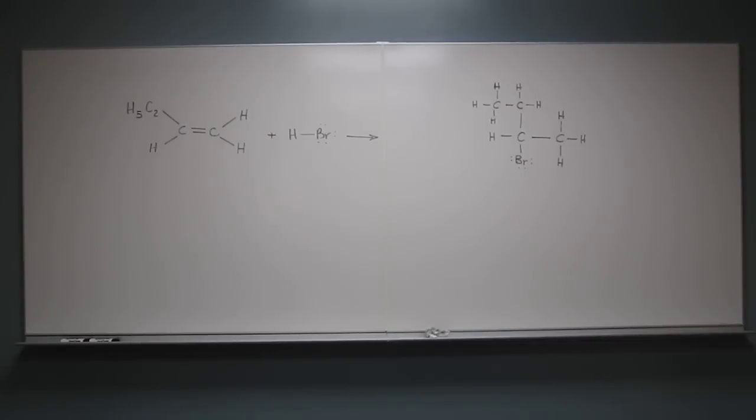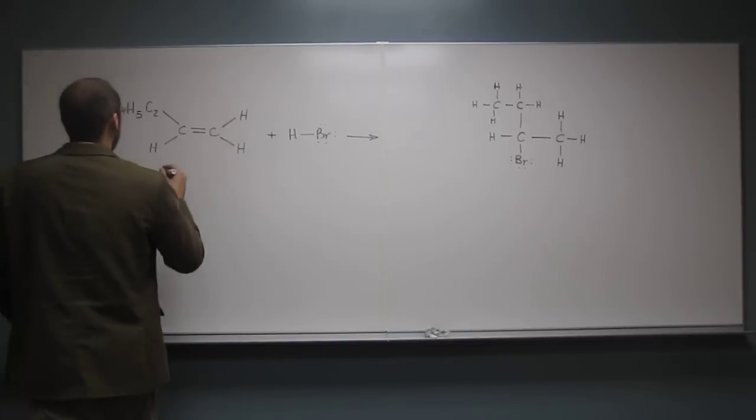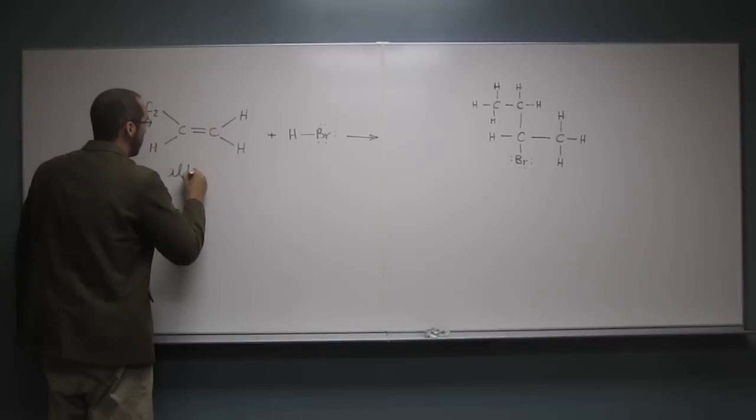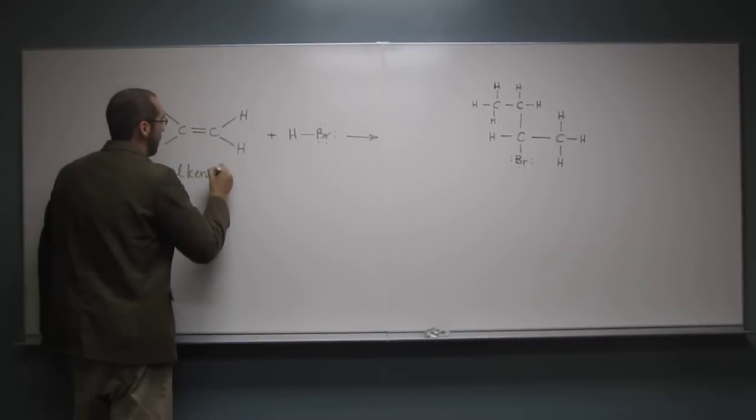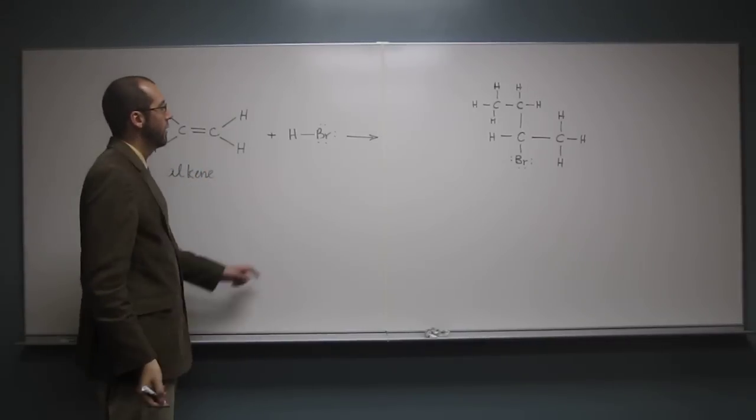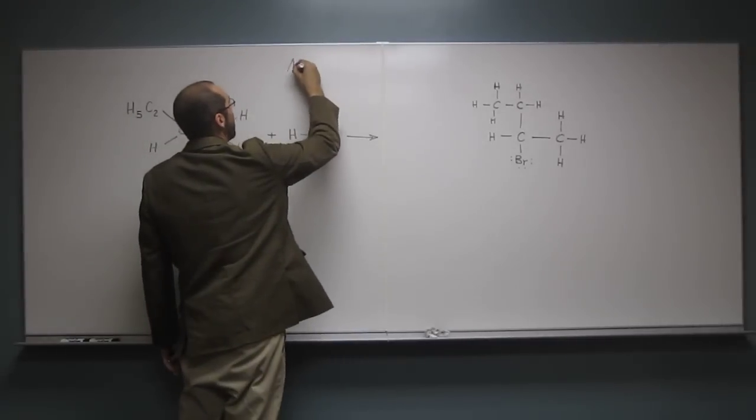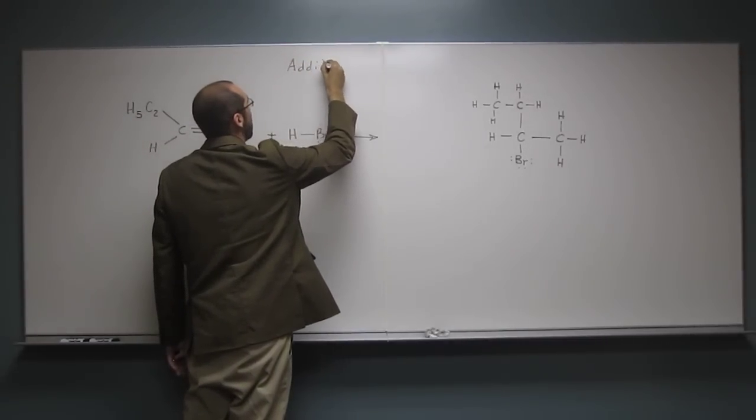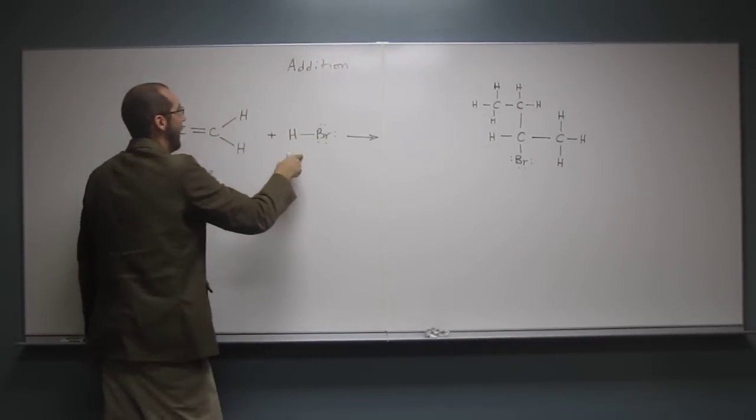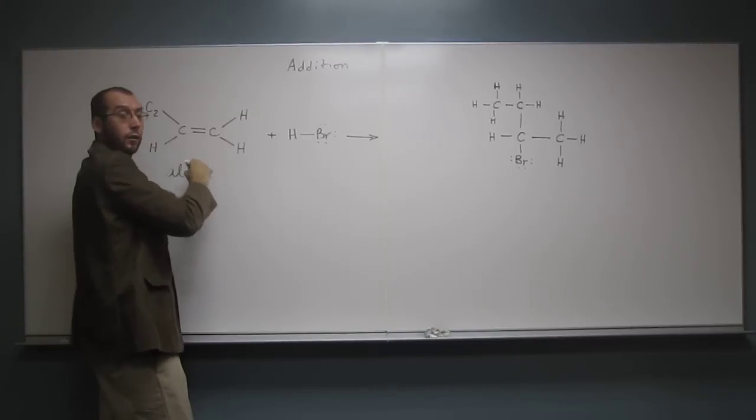So again, we're just predicting products here. We're not showing mechanism. Is everybody okay with this? So whenever you've got an alkene and one of these halogen acids, we're going to do an addition reaction, which adds this to the alkene.